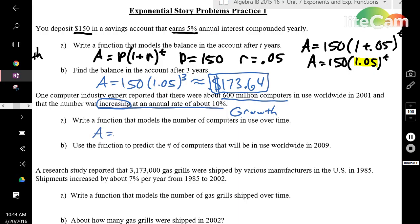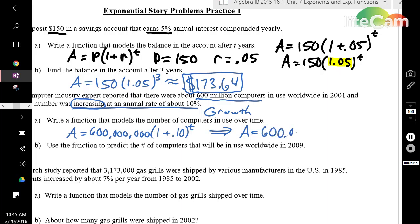Your function is going to be A equals P. Your initial value in 2001 is 600 million. You could just put down 600 and then put million at the end of your answer, or you can write out the entire number. 1 plus 10%, the rate is 0.10. To simplify this even more, A equals 600 million times 1.10 to the power of t. This is a function that, if you were given an amount of time, you could find out how many computers are in the world after that set amount of time.